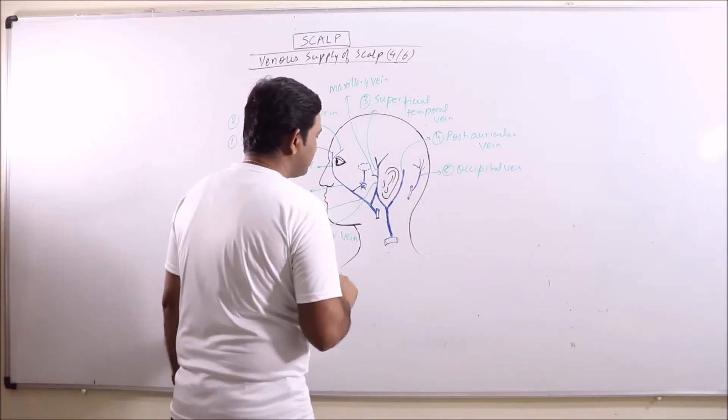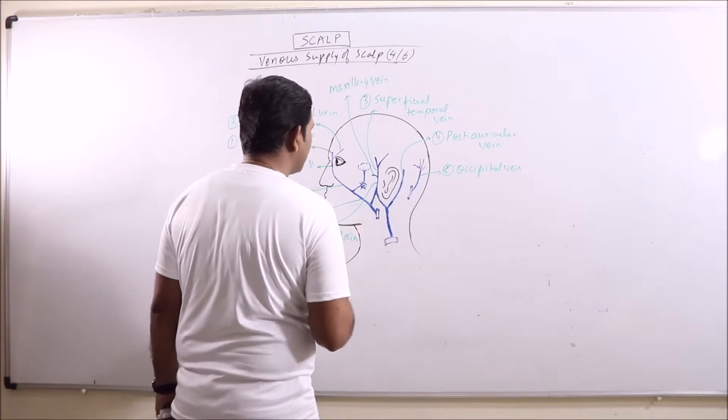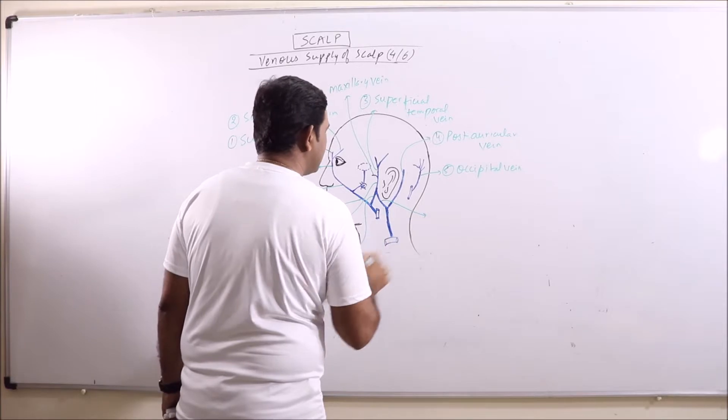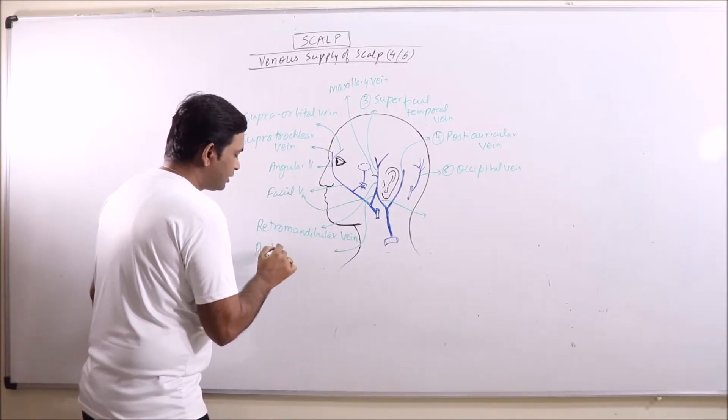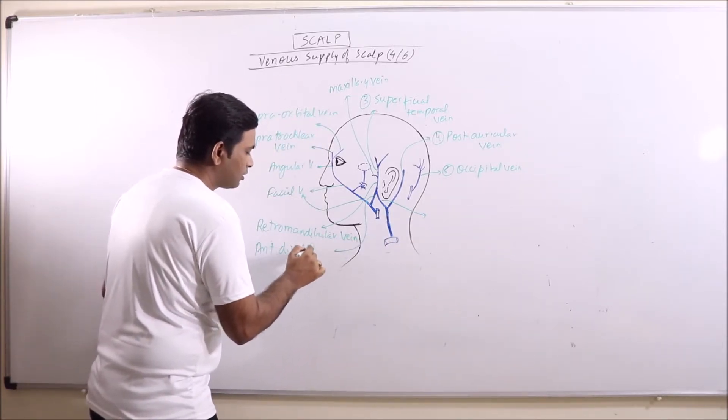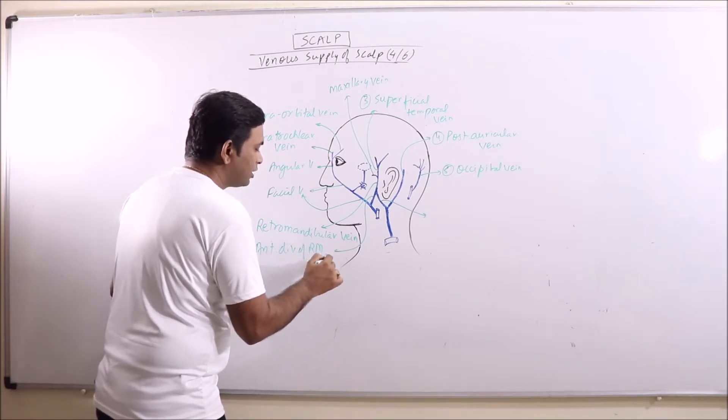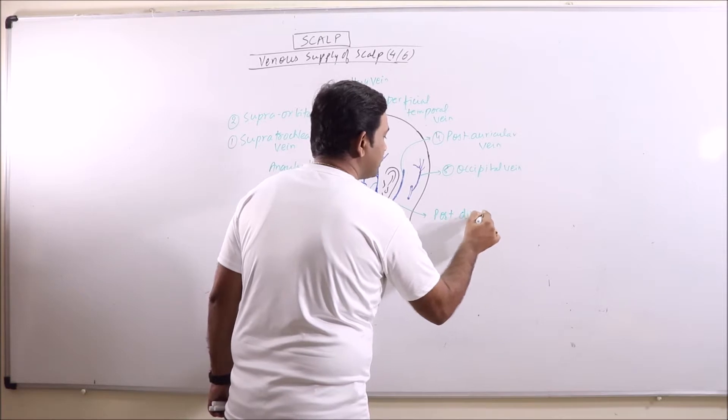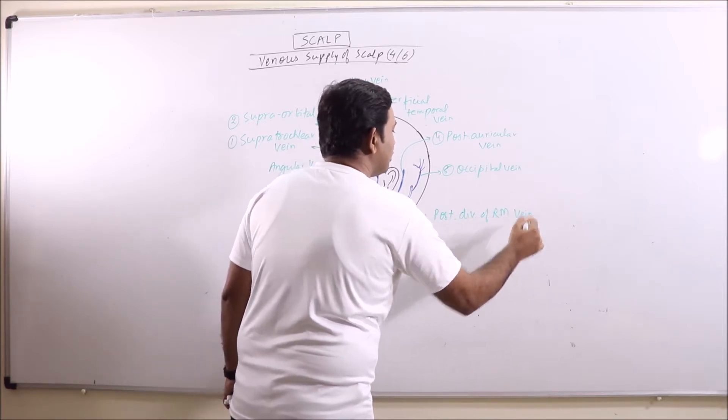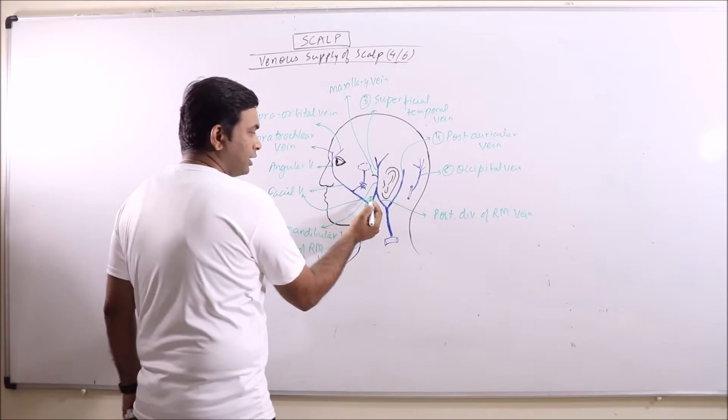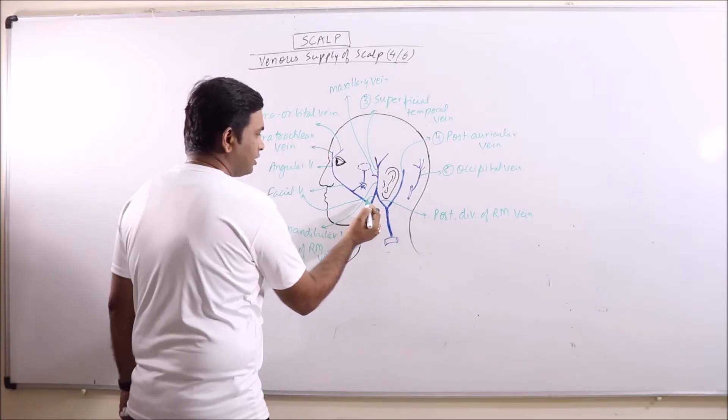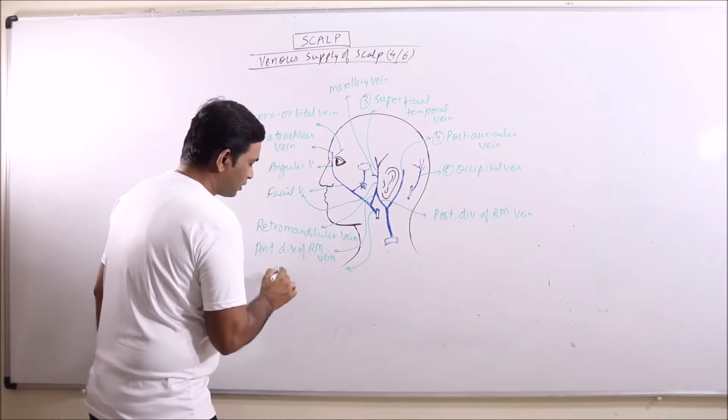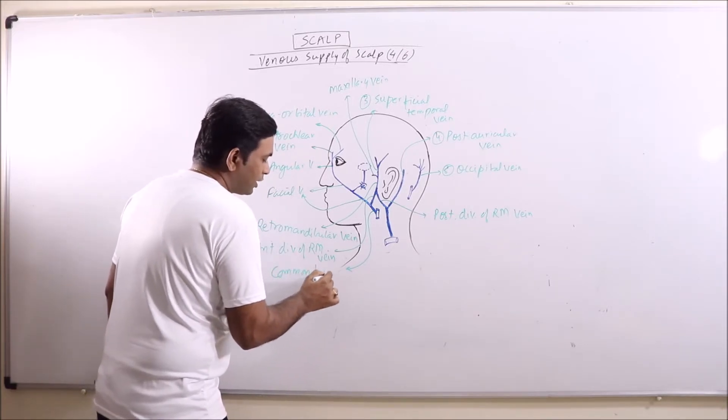This retro-mandibular vein immediately divides into two branches. This is anterior division. This one is posterior division. So anterior division of retro-mandibular vein combines with the facial vein to form common facial vein.